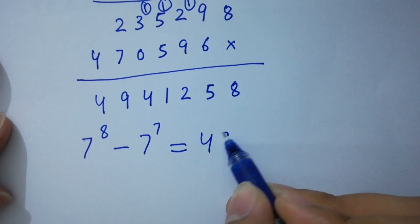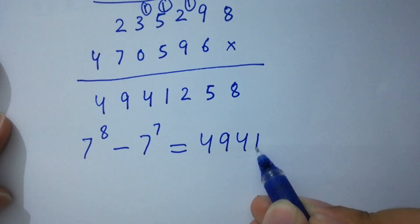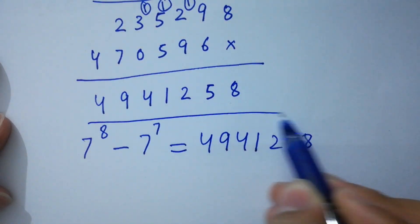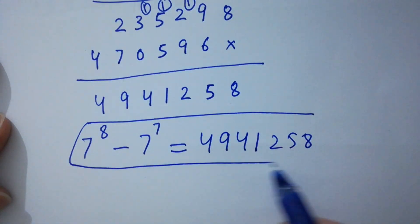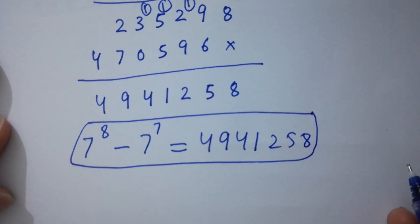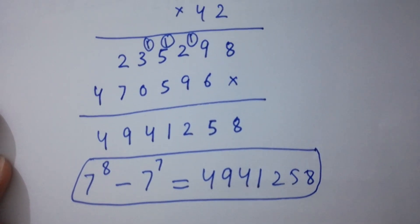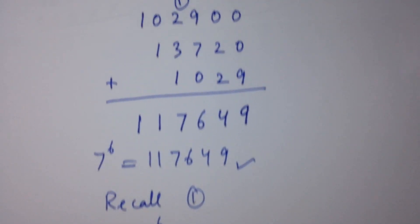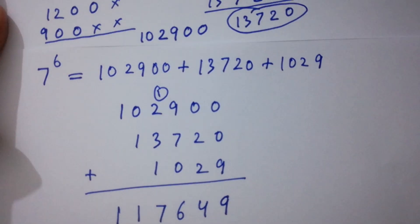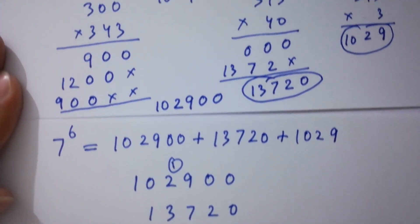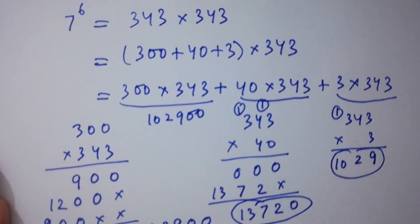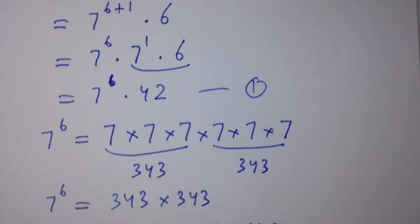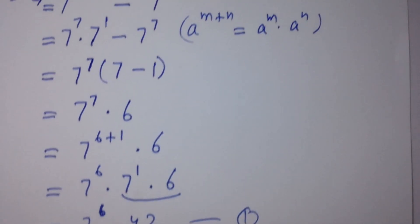So finally, 7 to the power 8 minus 7 to the power 7 is equal to 4,941,258. I solved this without using any calculator. Thanks for watching this video. Please subscribe to this channel to get notifications of my new videos, don't forget to share these videos with your classmates and friends so they also benefit, and you can visit the playlist of this channel to learn more. Okay, bye!